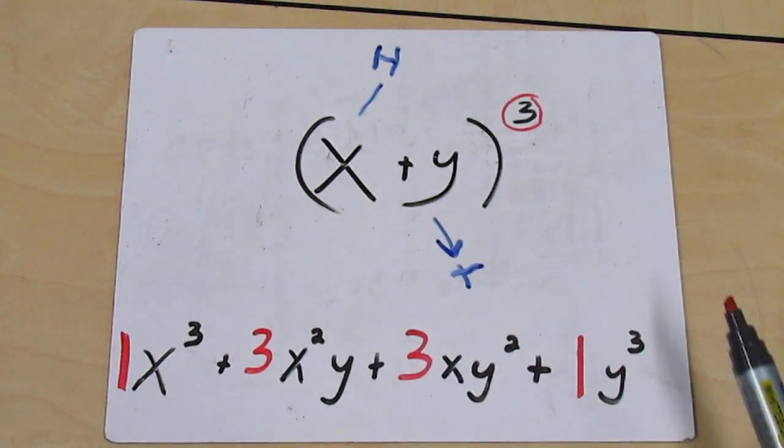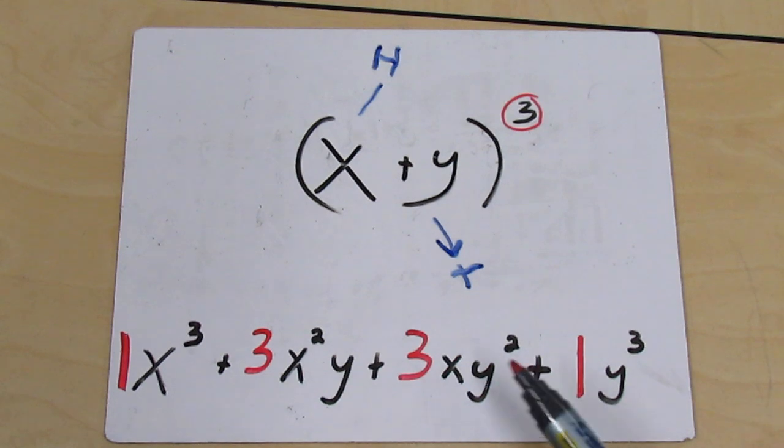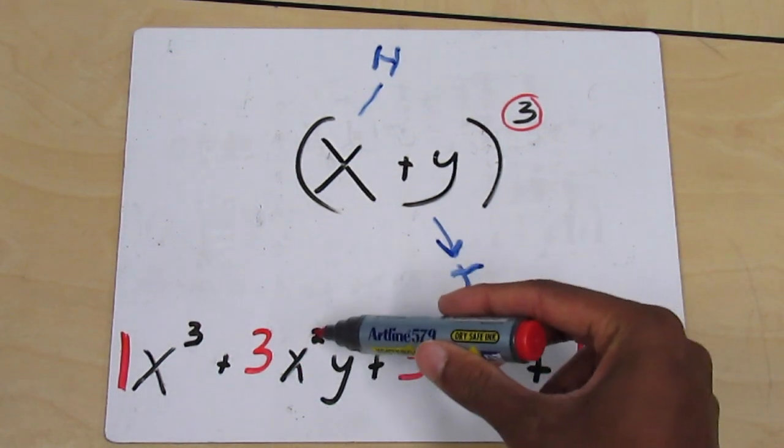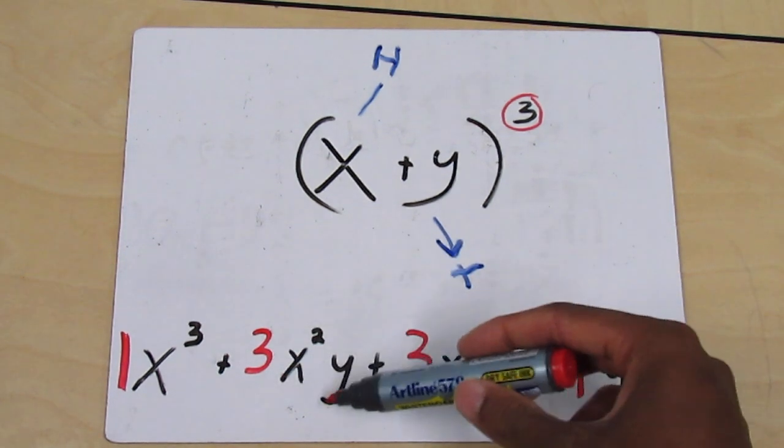So your 3x²y is the one that you're going to use to figure out your probability. You'll just substitute 0.50 for x and y.